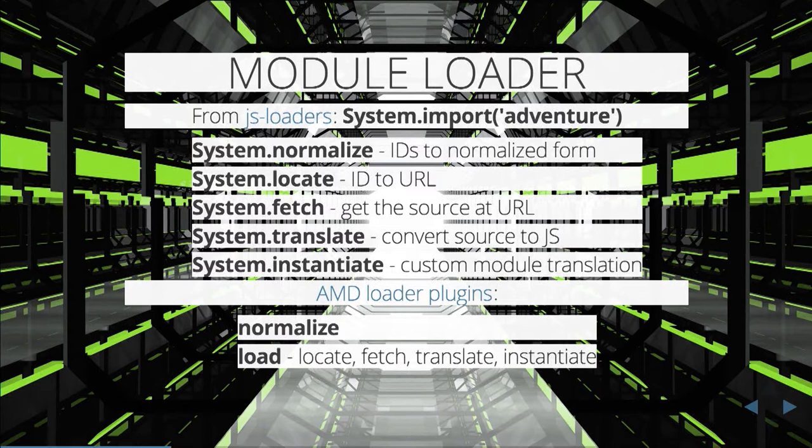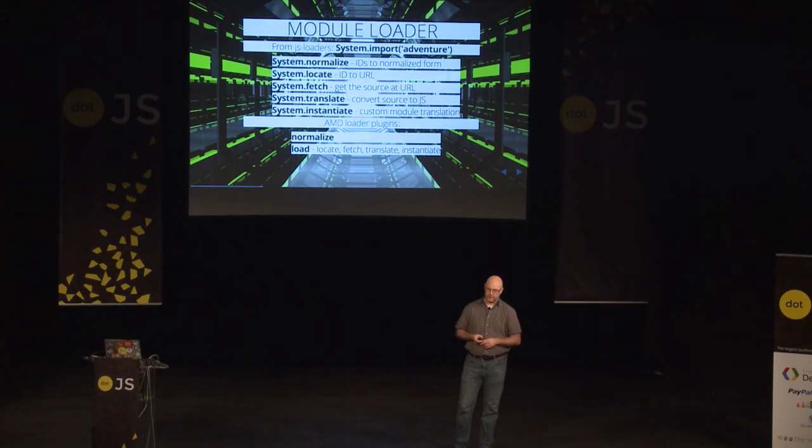The loader API is extensible enough that you can override or modify those steps. You can see here system.normalize — these are all functions you can override. system.normalize converts a relative ID into a normalized absolute ID. Locate takes that ID and turns it into a URL. Fetch gets the source of that URL. Translate gives you an opportunity to modify the source, to turn it into JavaScript. So if you're working with TypeScript or CoffeeScript, this is where you might plug in to do that translation.